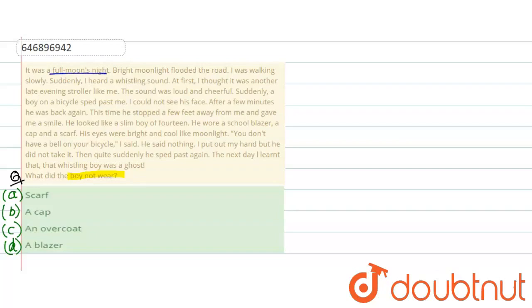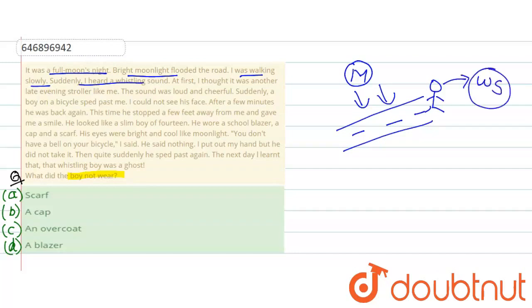It was a full moon's night. Full moon's night yaani ki purnima ki raat thi. Bright moonlight flooded the road. Ab road pe jo hai poori tarah se moon ki full moon thi. Toh moon ki jo light hai poori road pe aa rahi hai. I was walking slowly. Yaani ki koi hai jo road pe chal raha tha dheere dheere. Suddenly I heard a whistling sound. Woh insaan kya sunta hai? Whistling sound sunta hai. Yaani ki seeti bajane ki awaaz sunta hai.